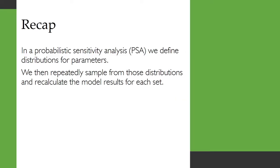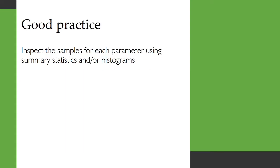In a probabilistic sensitivity analysis, or PSA, we define distributions for parameters for our model. We then repeatedly sample from those distributions and recalculate the model results for each set. It's good practice, after you've generated those samples, to inspect them using summary statistics and/or histograms to make sure that the distributions you've used are correct.